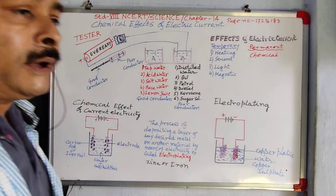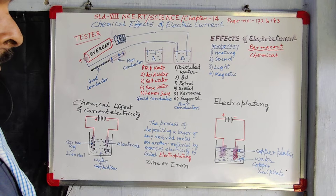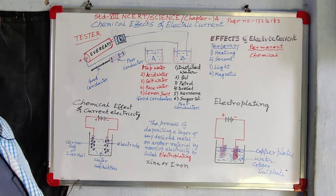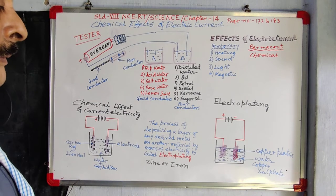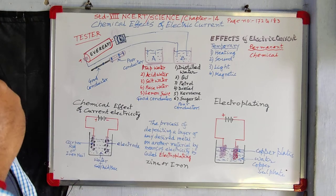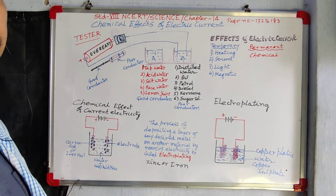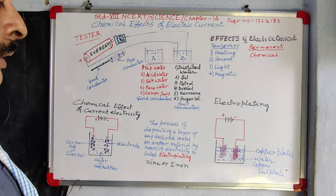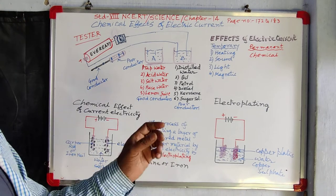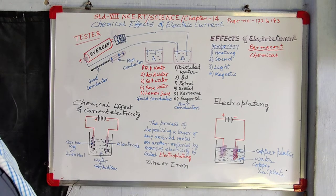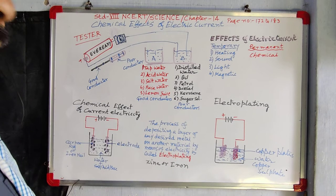Iron is a cheap metal, but it gets corroded very easily — it is reactive and gets corroded. So we have to protect the iron. It is cheap but we have to protect it. So we give an electroplating of zinc over iron, and the iron is then protected from rusting.